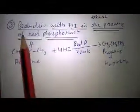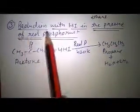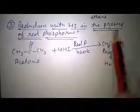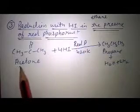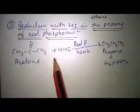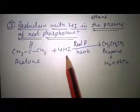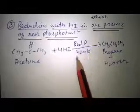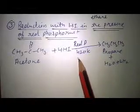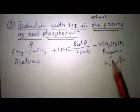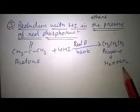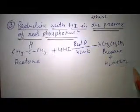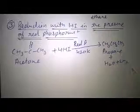Students, further complete reduction is reduction with HI in the presence of red phosphorus. In this reaction, acetone reacts with HI in the presence of red phosphorus at 420 K to change into propane plus water plus 2H₂.